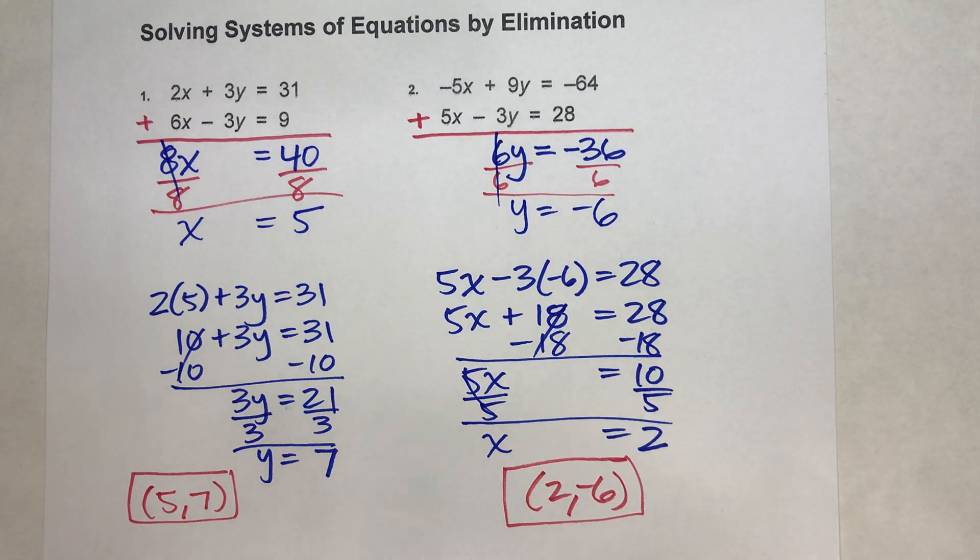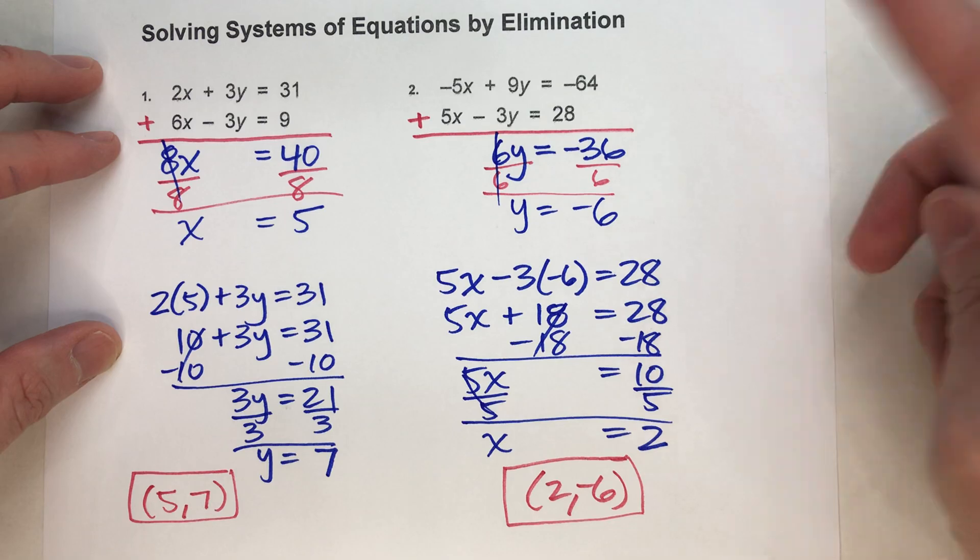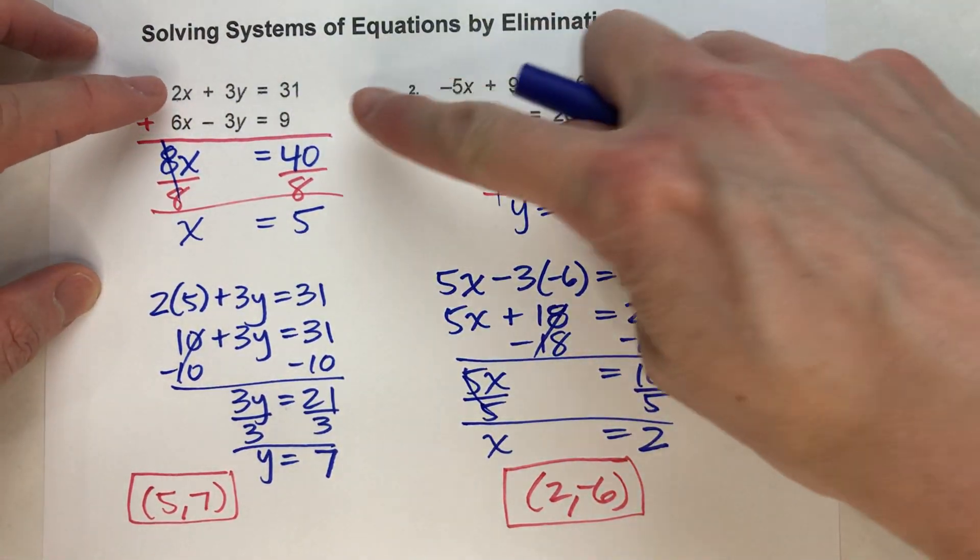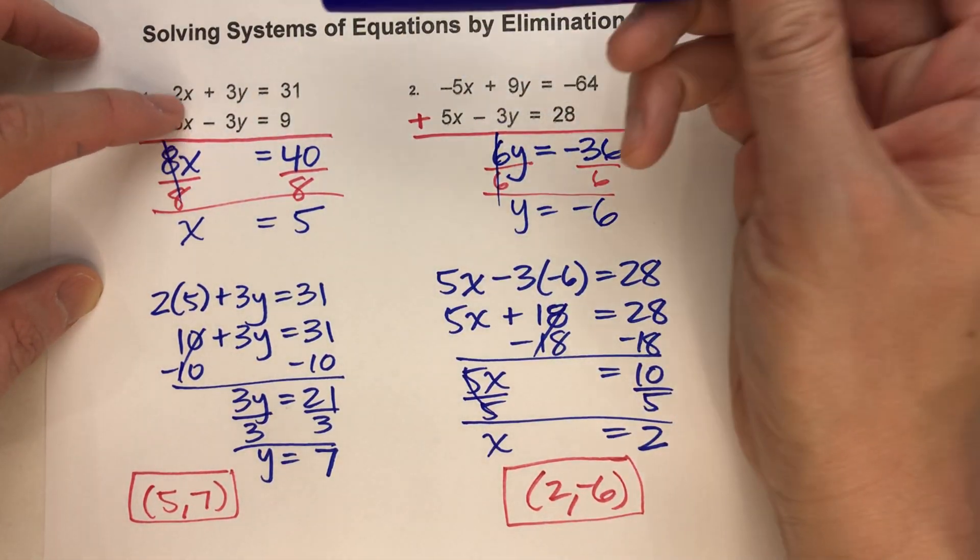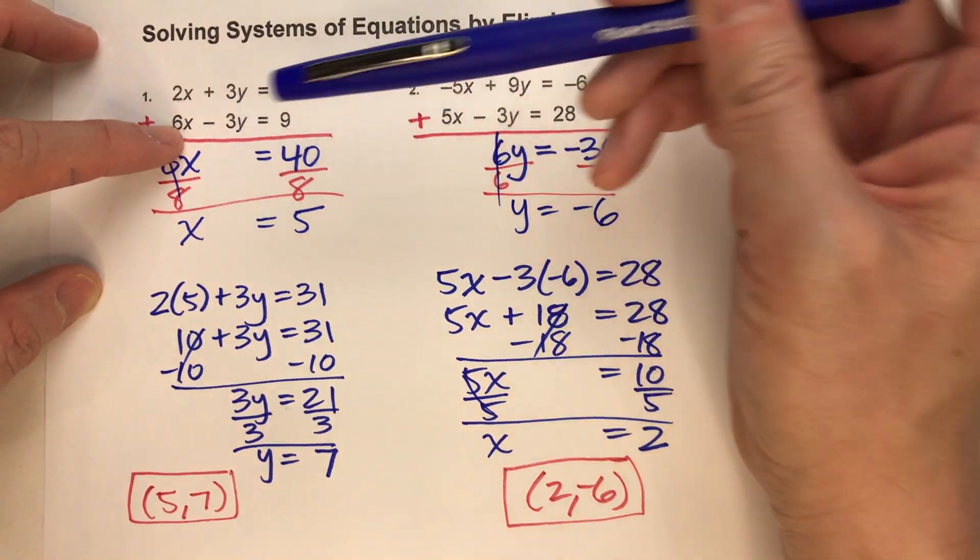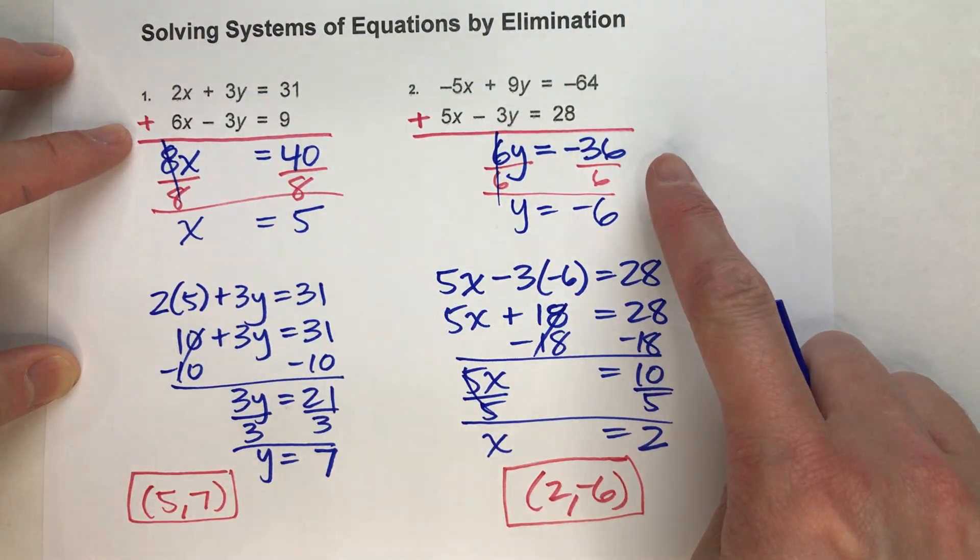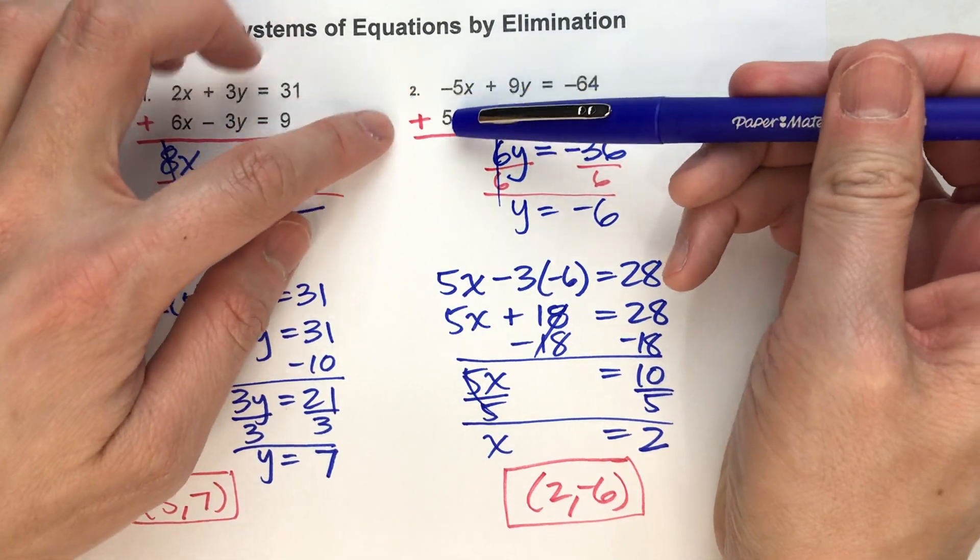One thing to point out in this method: this method of adding the two equations together only works because either the x's or the y's have the exact same number in front of them with one positive and one negative. If these were different numbers, this method wouldn't work. Or if these were the same sign, if this was both positive 5x and positive 5x, we couldn't just add them together because it wouldn't eliminate our x's.